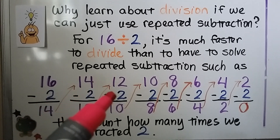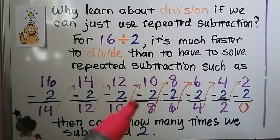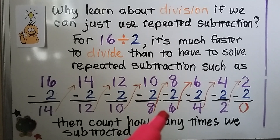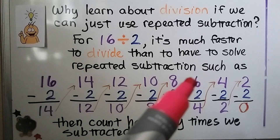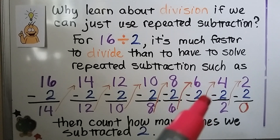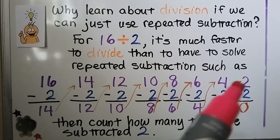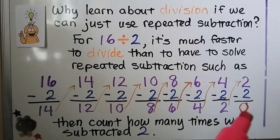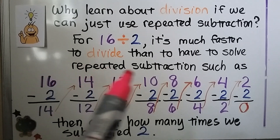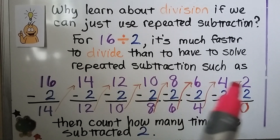Then 12 comes up, we subtract another 2 and get 10. Then 10 comes up, we subtract 2 and get 8. Then 8 comes up, we subtract 2 and get 6. Then 6 comes up, we subtract 2 and get 4. We put 4 up and subtract 2 to get 2. We put 2 up and subtract 2 until we get to 0. Then we count how many times we subtracted 2: 1, 2, 3, 4, 5, 6, 7, 8.